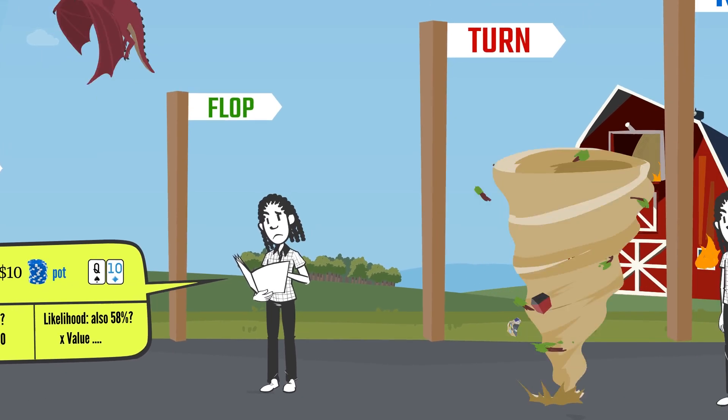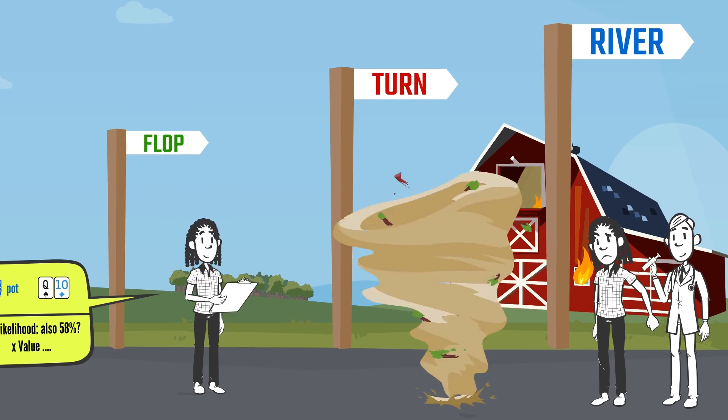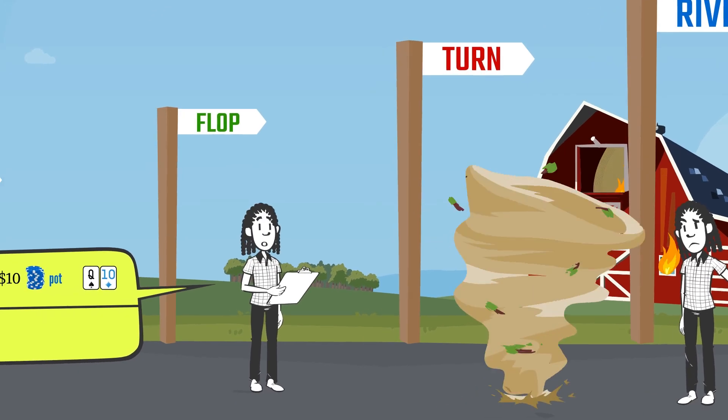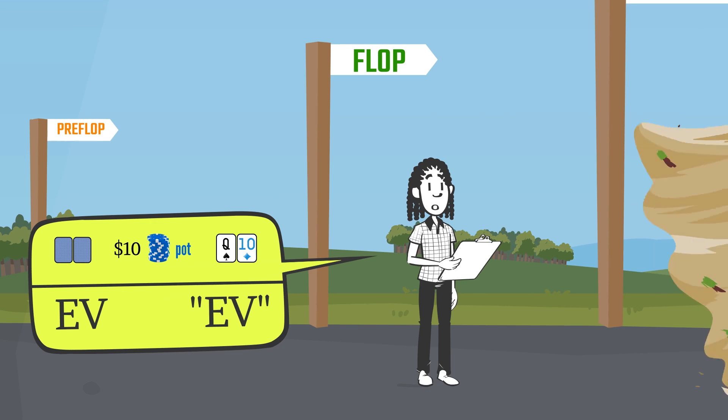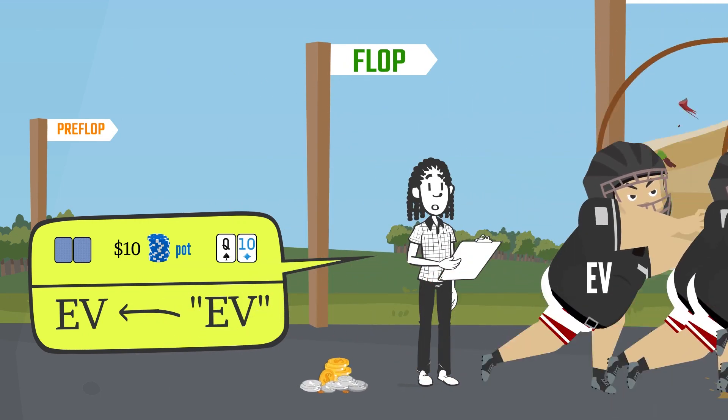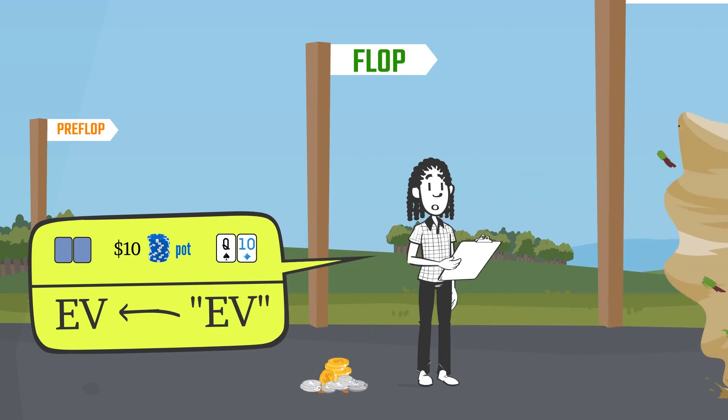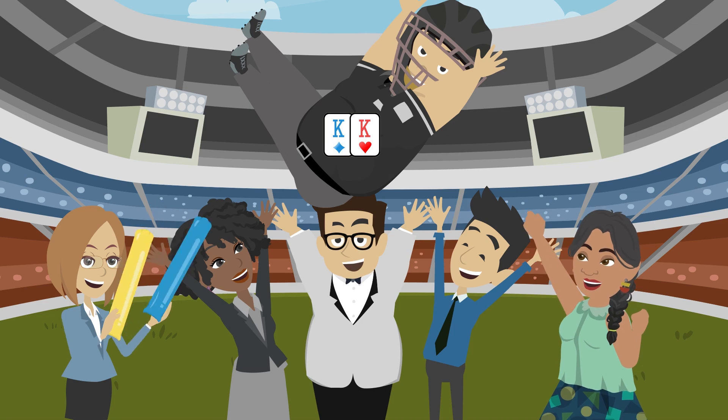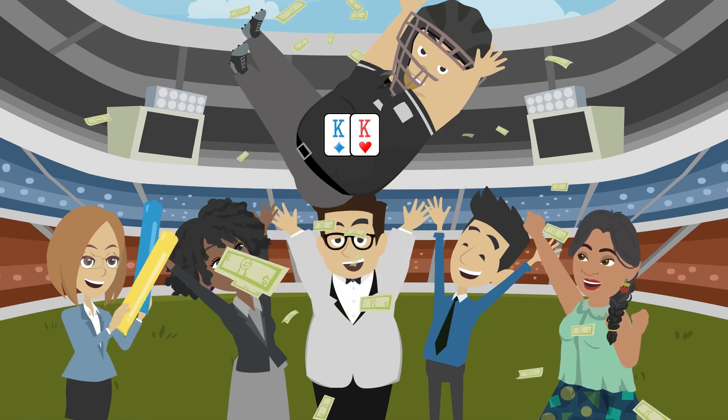On earlier streets, calculations like these are more complicated because there are so many different possible events on the remaining streets. As a result, EV on earlier streets becomes much more of an estimation as opposed to a certainty. In addition, EVs run extremely close together on earlier streets because the pot is smaller and only the strongest possible hands can guarantee making a lot of money on the remaining streets.